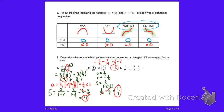For the last problem, the first term is one-sixteenth and the common ratio is found by taking negative one-eighth divided by one-sixteenth. That gives negative one-eighth times sixteen over one, which equals negative two. So the common ratio is negative two.